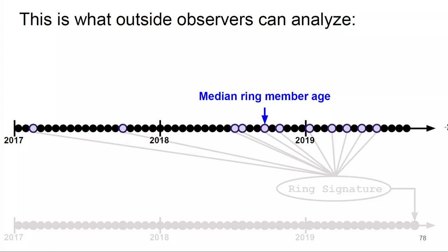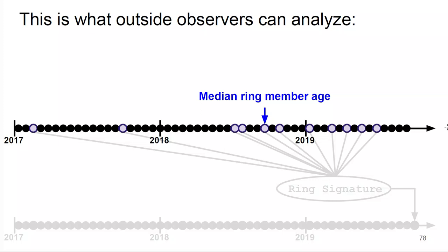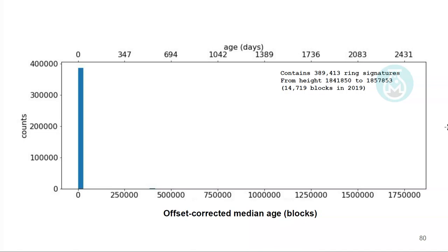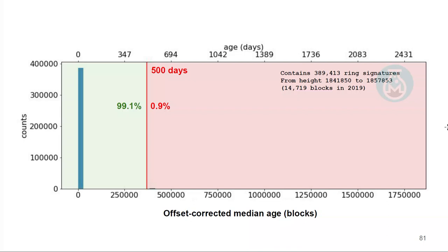Looking at the offset-corrected median age from the outside observer's perspective — the median ring member is the sixth ring. I'm going to ignore the length of time up to the first ring member to allow for delayed broadcast: I generate a transaction, I don't have internet access for a day, then I broadcast it. The x-axis shows the offset-corrected median age. The main thing we see is that 99% of people use the correct decoy selection algorithm, so most are very short. If I put a 500-day mark, you can see a couple of people doing strange things. There's the regular anonymity pool on the left and several small anonymity puddles on the right.